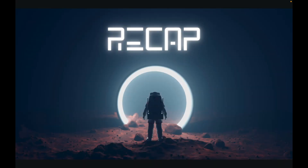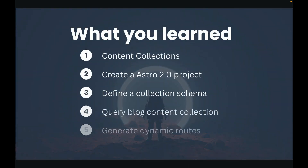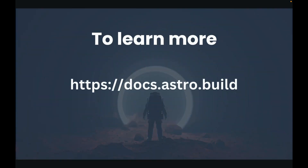Well friends, we covered a lot of material in this video, so let's quickly recap what you learned in this tutorial. First, we briefly discussed what content collections are and how they help us better organize our content while providing type safety for our Markdown and MDX files. Then we learned how to create a new Astro 2.0 project. Next, we learned how to define a collection schema for our blog content collection. Then we learned how to query the blog content collection to render each blog post onto the homepage. And finally, we learned how to create dynamic routes for each blog post. To find out more about content collections and all the other awesome features in Astro 2.0, make sure to check out Astro's docs.